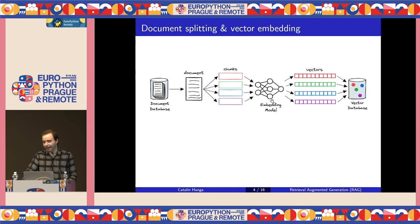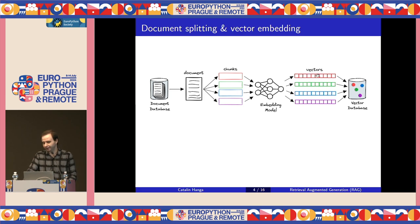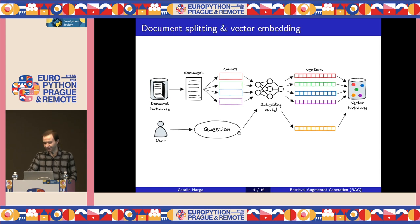After splitting, we use an embedding model to convert every chunk of text into a vector of real numbers. We do this because the algorithm for semantic search is a mathematical operation that has to be performed on numerical vectors — it cannot be applied directly on plain text. The vectors are then stored and indexed into a special type of database optimized for handling high-dimensional vectors. When the user asks a question, the question doesn't need to be split into chunks; it can be directly embedded and compared with the rest of the vectors.